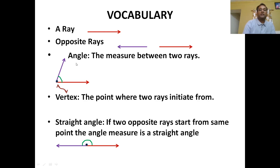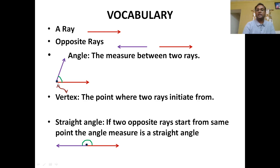Now let us know what is an angle. An angle is the measure between two rays — the degree measure between two rays. Here you can see one ray and another ray; both are coincident rays, meaning they start from the same point. At this coincident point they make an angle. This coincident point is called the vertex. The plural of vertex is vertices — V-E-R-T-I-C-E-S.